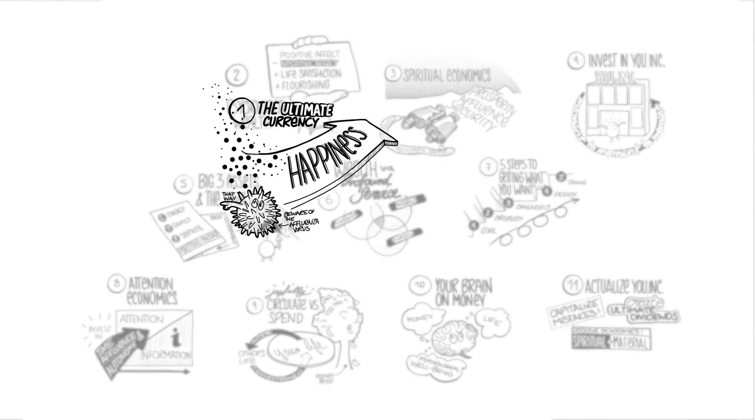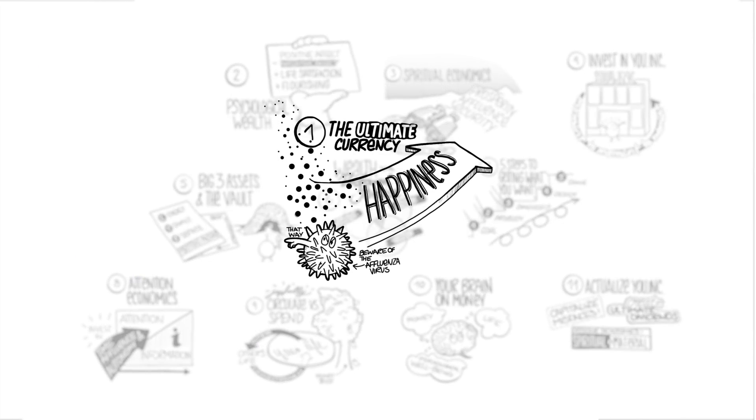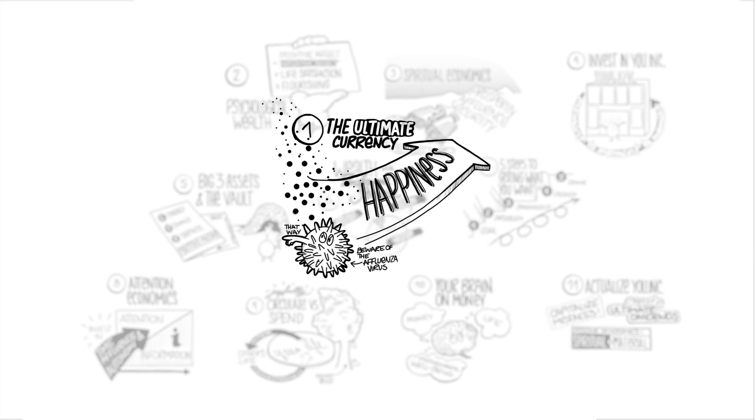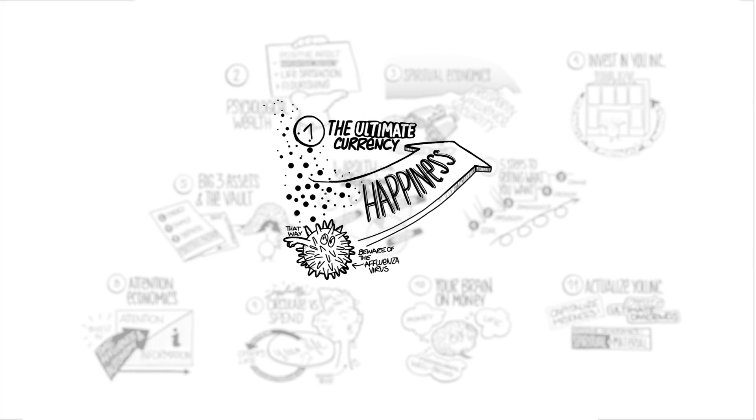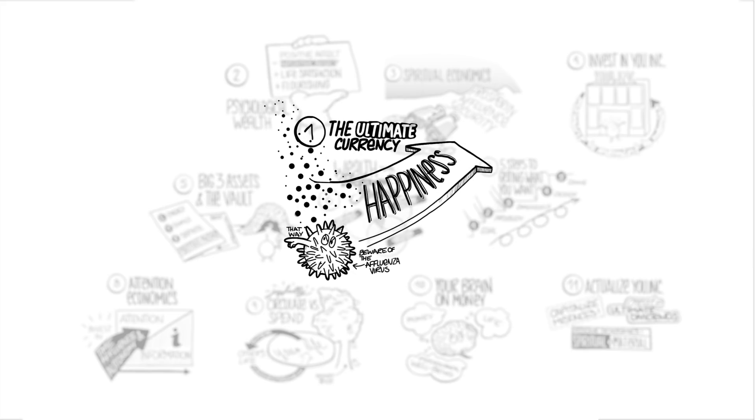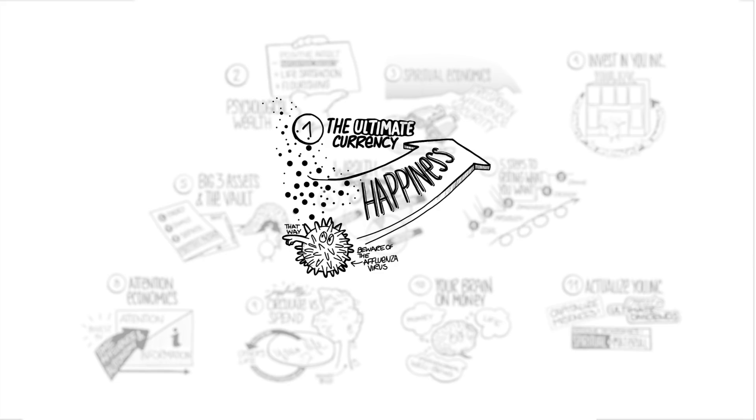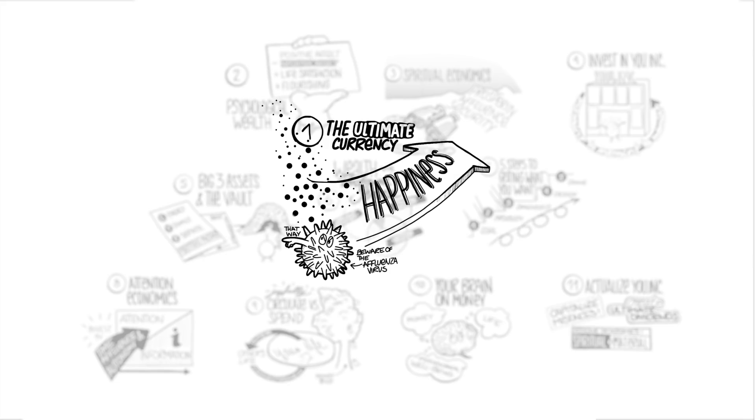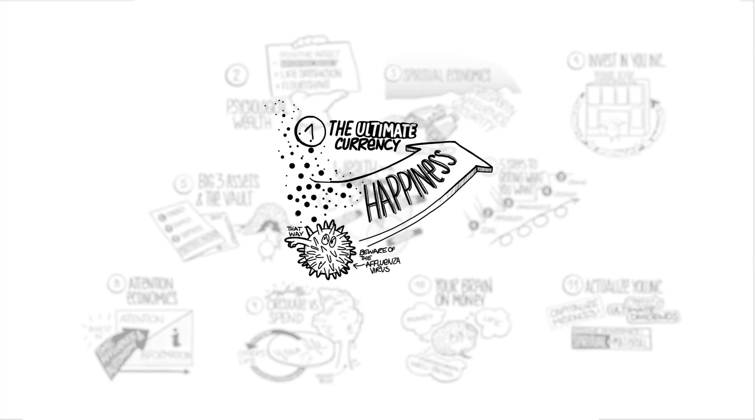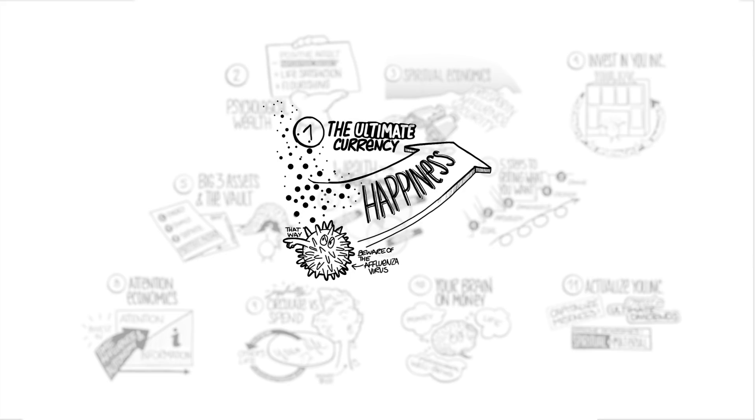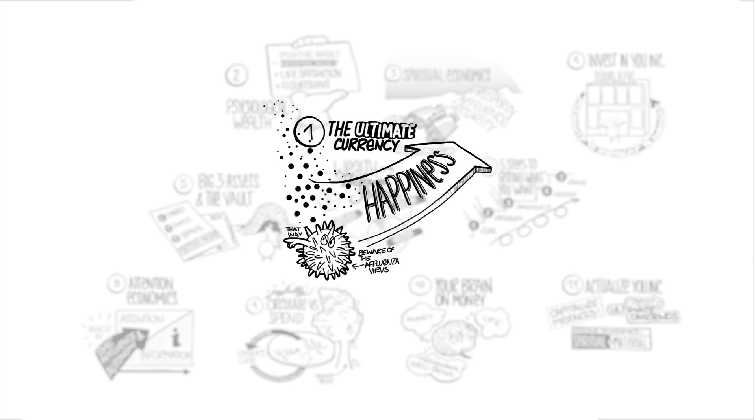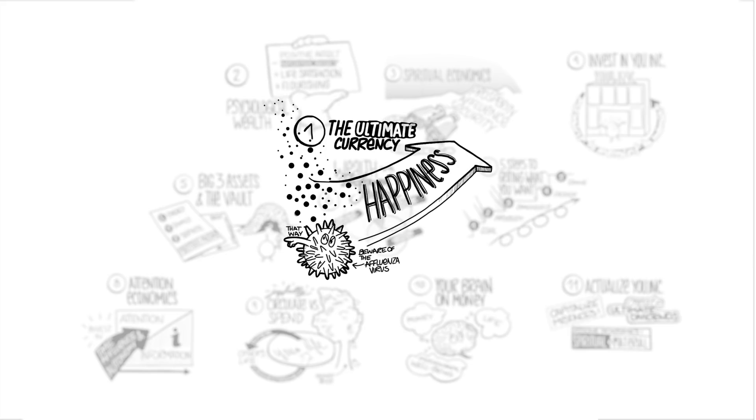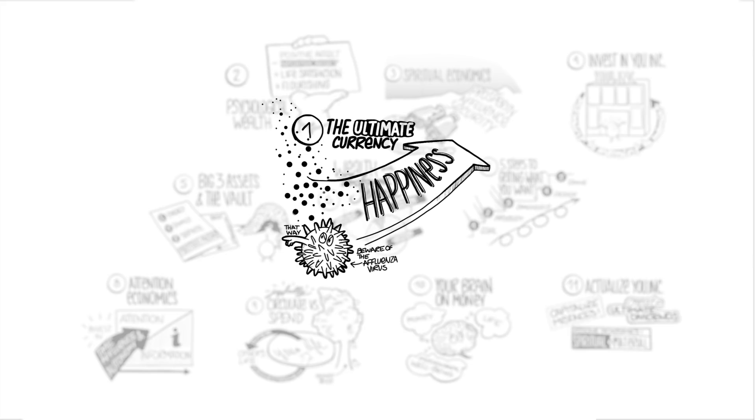Our first big idea is the ultimate currency. What's the ultimate currency we're all after? It is happiness. Every single thing we do is directed toward meeting that end. Therefore, we want to choose our goals wisely as we pursue creating true wealth in our lives. We'll talk about the affluenza virus, the opposite of happiness that psychologists discuss when you get a little too distracted in the extrinsic pursuit. Of course, money is a wonderful tool, but we want to be wise as to how we pursue it and how we use it.